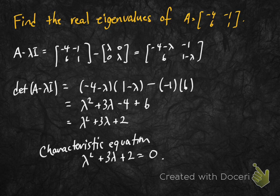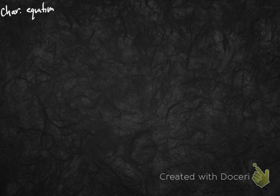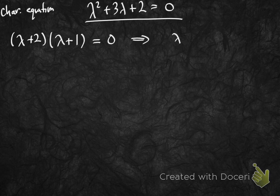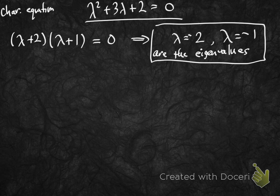The characteristic equation is lambda squared plus 3 lambda plus 2 equals 0. We solve this for lambda to find the eigenvalues of A. Factoring this quadratic, the roots of the characteristic polynomial give us the eigenvalues of the matrix: minus 2 and minus 1.